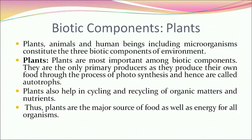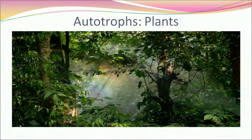The biotic components include plants, animals, human beings and microorganisms. Plants are the most important among biotic components. They are the only primary producers, as they produce their own food through the process of photosynthesis, and hence are called autotrophs. Plants also help in recycling of organic matter and nutrients, and are the major source of food as well as energy for all organisms.